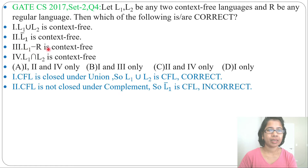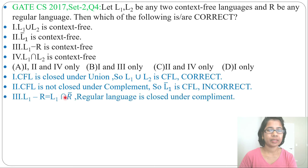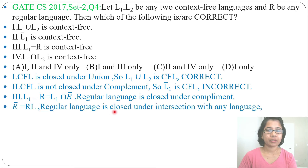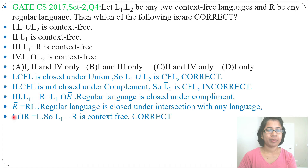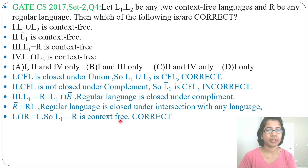Third option: L1 minus R. You can rewrite L1 minus R as L1 intersection R complement. Regular language is closed under complement, so R complement is also regular. And regular language is closed under intersection with any language — meaning context-free intersection regular is context-free. So L1 minus R is also context-free, since L1 is context-free and L1 minus R equals L1 intersection R complement, and intersection with a regular language keeps it context-free. This is true.